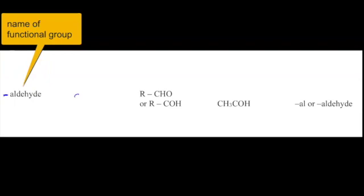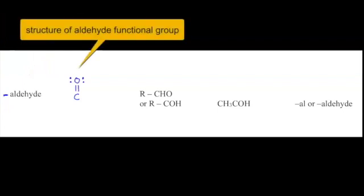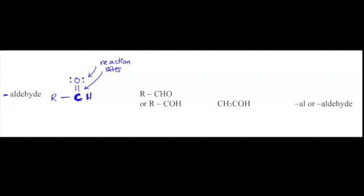The aldehyde functional group has a carbon with a double bond to an oxygen and two lone pairs on the oxygen. Between the lone pairs on the oxygen and the double bond, this is potential for chemical reaction. The carbon also has a hydrogen, and the aldehyde group is bonded to the rest of the molecule. The carbon in the aldehyde group is always going to be carbon number one — either the first or the last in the carbon chain.